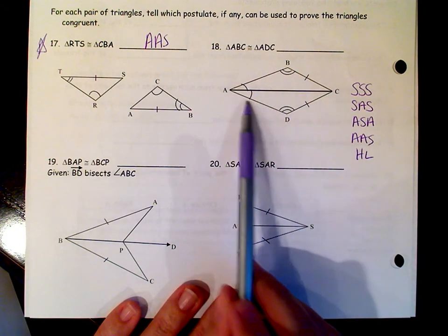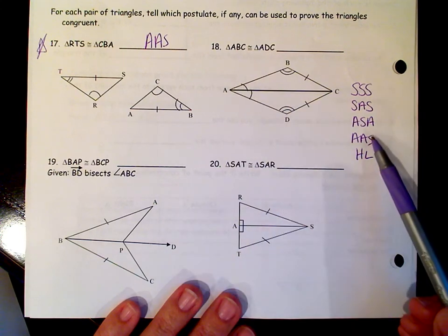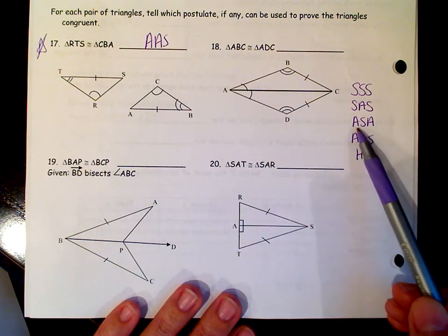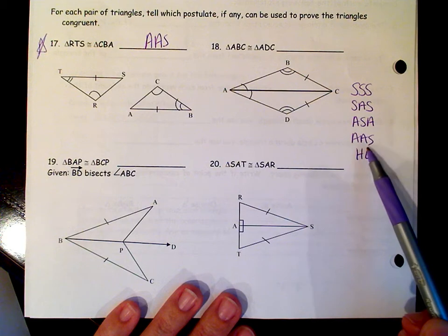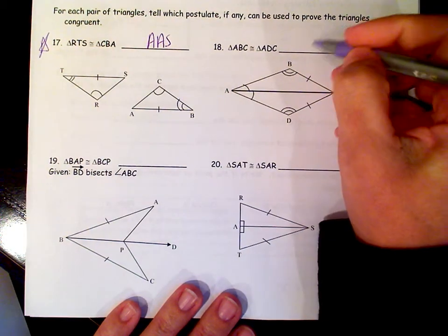Again, that's two angles and one side. The side is not the side that connects those vertices together, so this one's again going to be angle, angle, side.